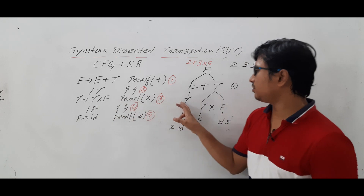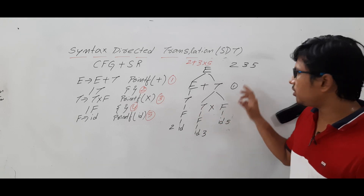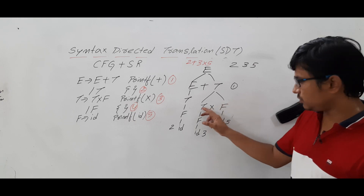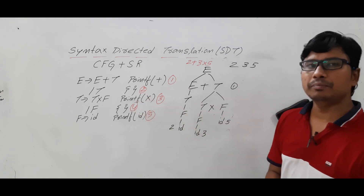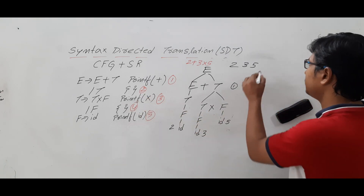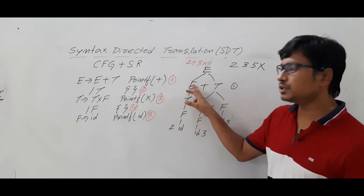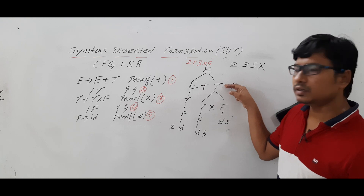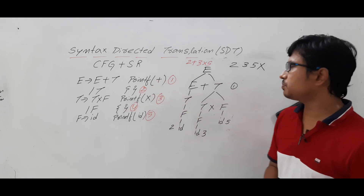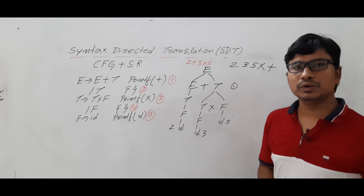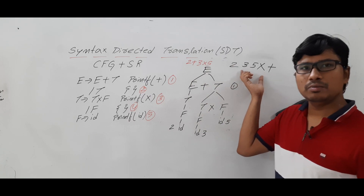T determines F — no need to perform anything. Similarly T determines F — no need to perform anything. Now for T star F, you need to print the multiplication symbol. For E determines T — no need to perform anything. Finally for E plus T, the semantic rule says print the plus symbol. So what we have done is converted the infix notation to postfix notation.